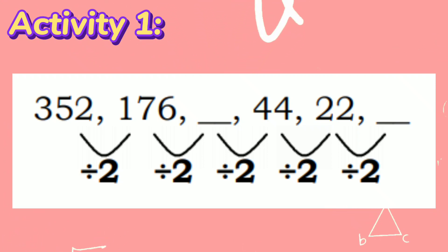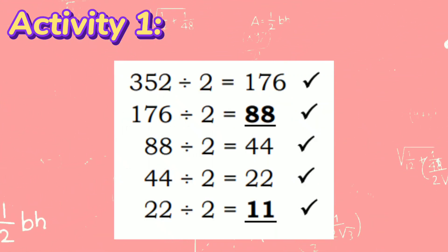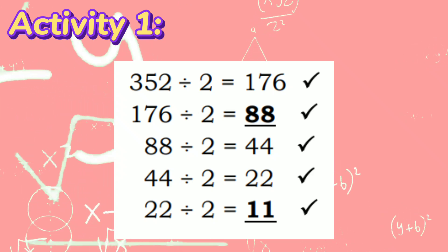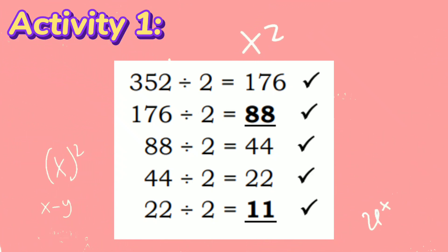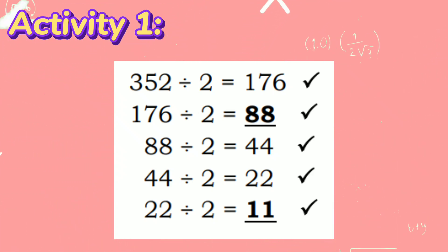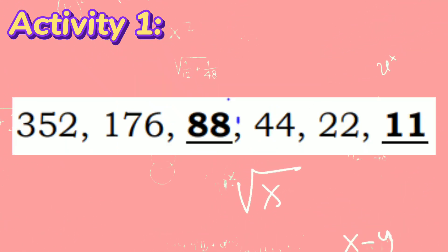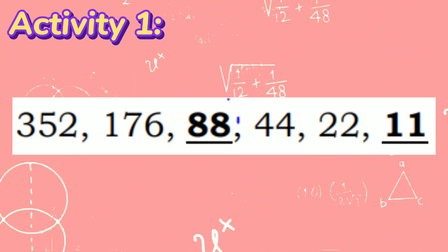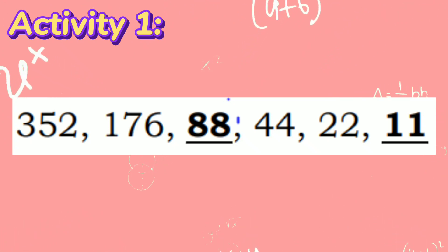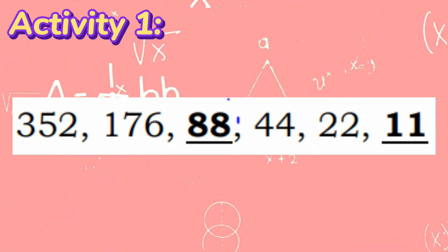After figuring out the pattern, let us proceed to Step 2 and test the pattern. Make sure to check if it is true or correct to the whole number sequence. Let's proceed to the last step: determine and write the missing terms. So the missing terms are 88 and 11.